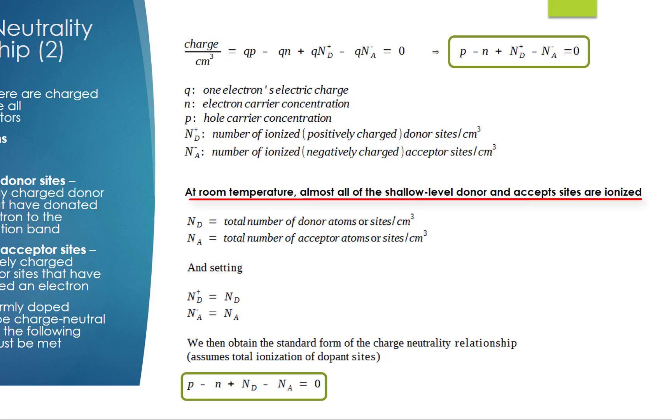Since all of them are ionized at room temperature, we can then set N_D+ equals N_D and N_A- equals N_A. Then we obtain the standard form of the charge neutrality relationship. This relationship assumes that all dopant sites are ionized: P minus N plus N_D minus N_A equals zero.